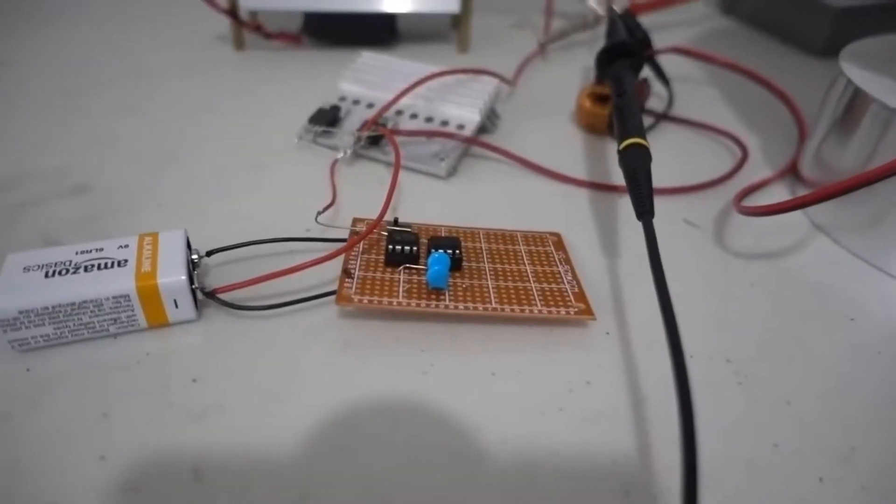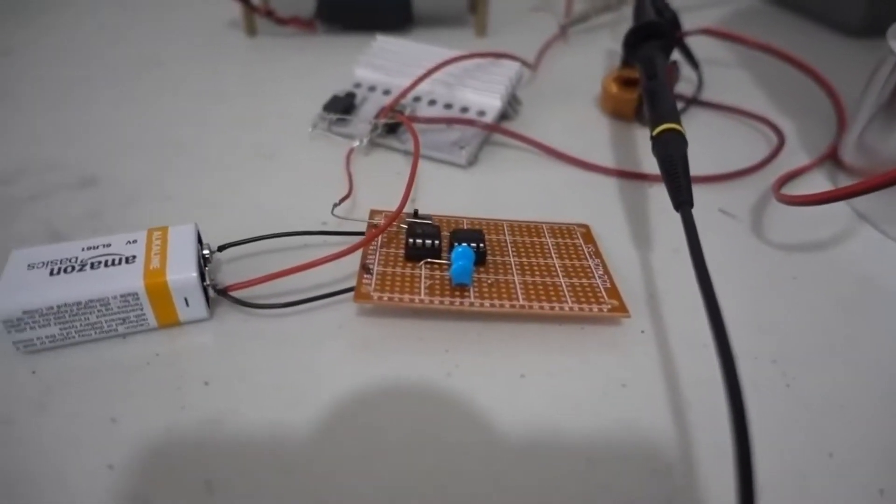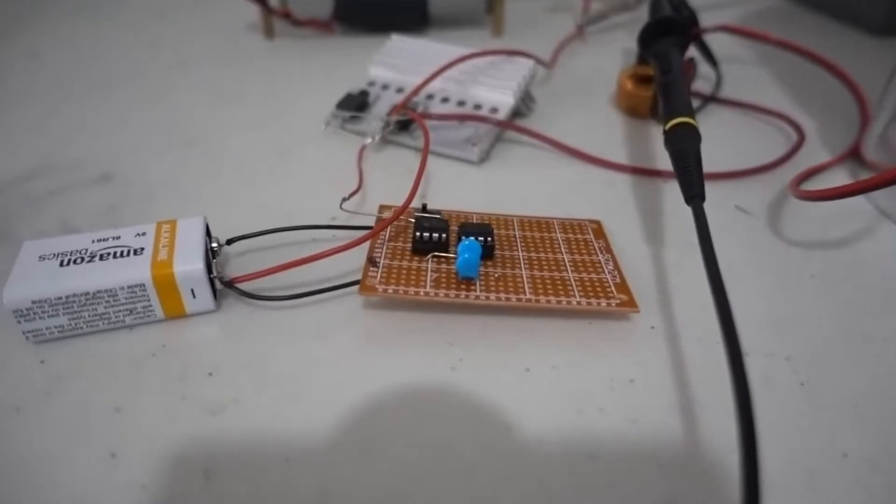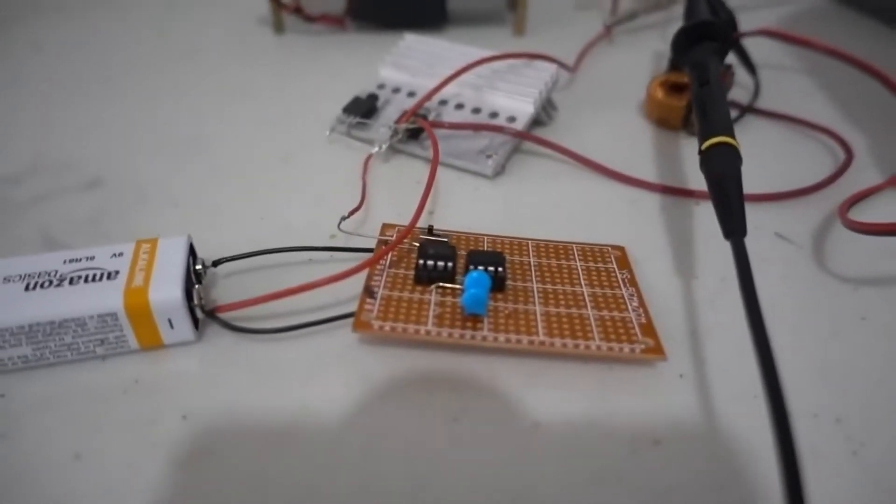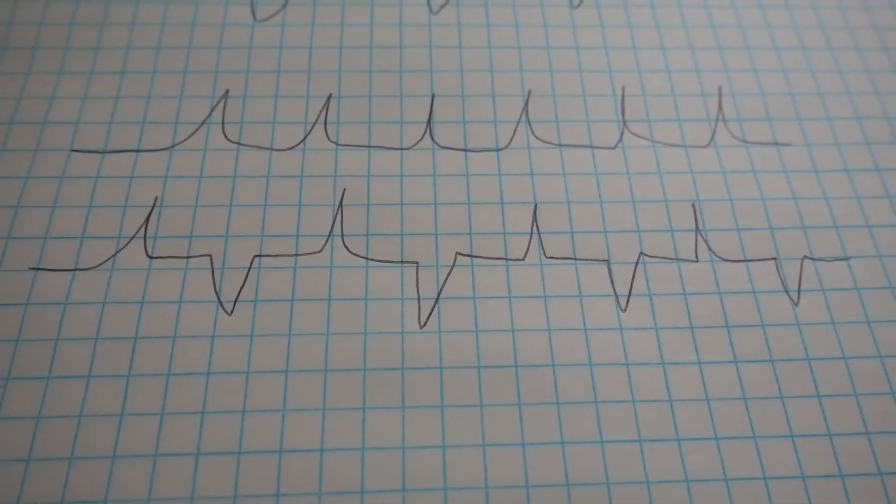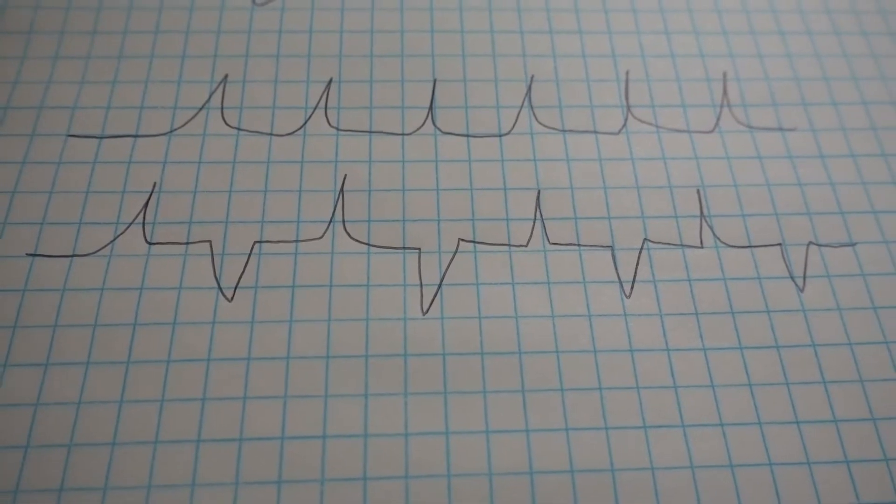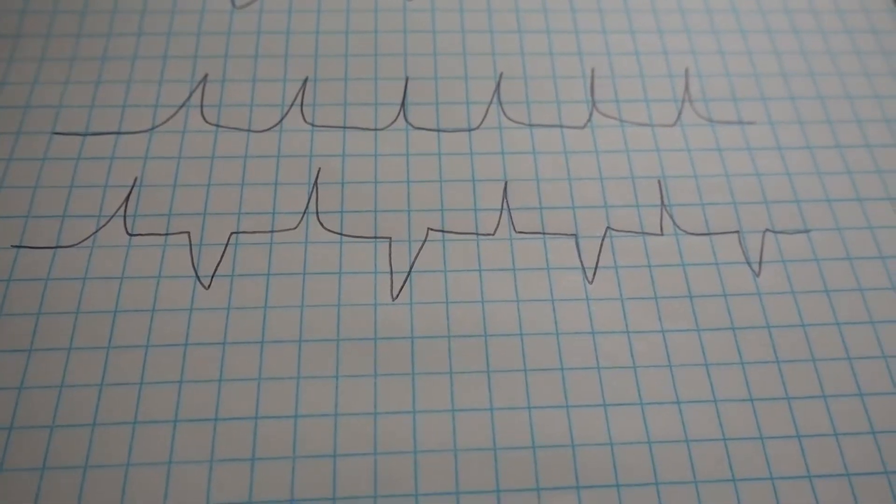So my previous one was actually made out of just a single NA555 timer, which is one MOSFET. The problem with doing a circuit like this for an ultrasonic cleaner is that you have just one-sided asymmetric pulses. And what you really want is pulses on both sides.